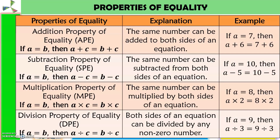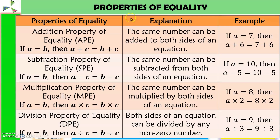Before we proceed to solving, let me discuss first the properties of equality. Here are the first four properties of equality that we are going to use to solve linear equations in one variable. These properties deal with operations, allowing us to perform them on both sides of the equation. The first one is the APE — addition property of equality — meaning the same number can be added to both sides of the equation.